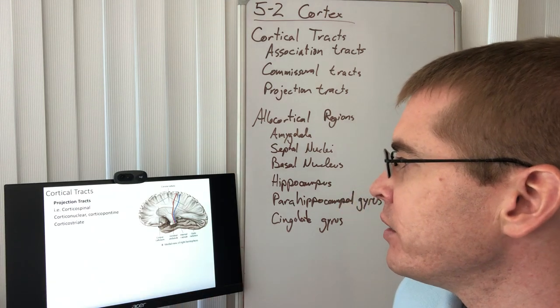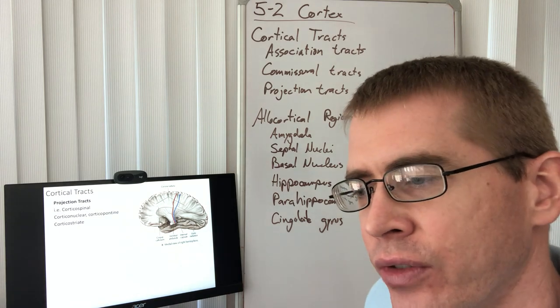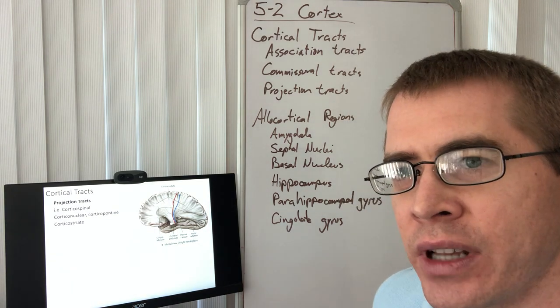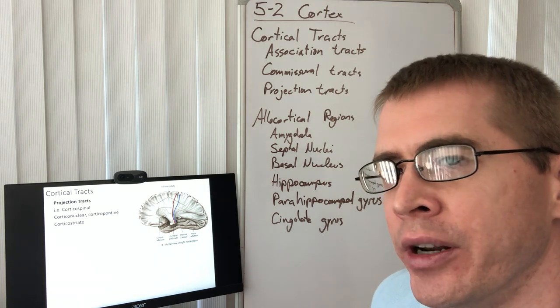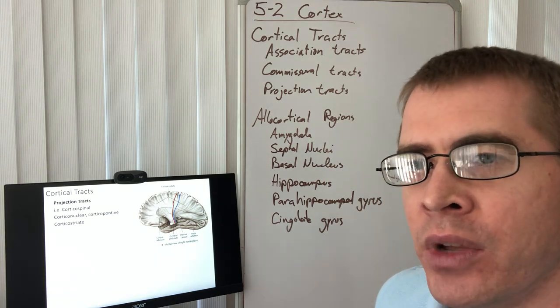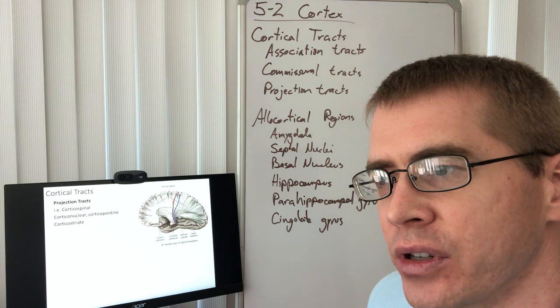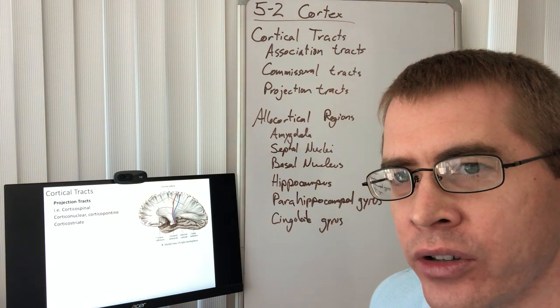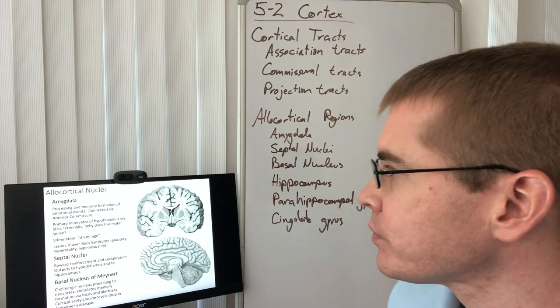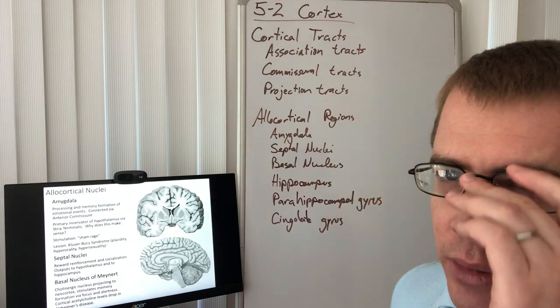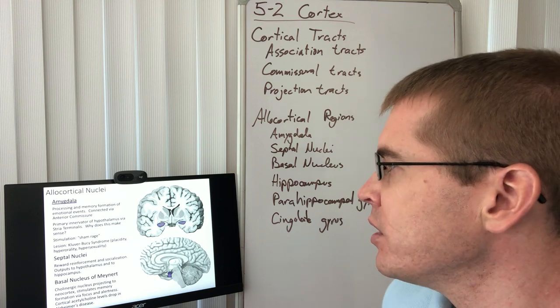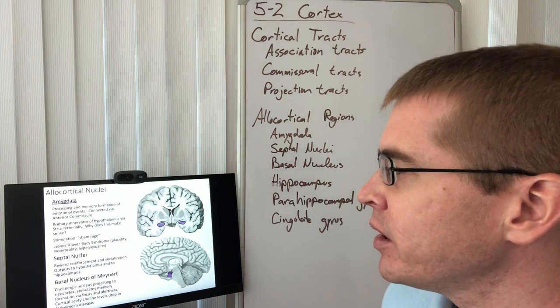And then corticostriate. So these are fibers from that layer 6 fusiform cell heading down into the striatum to inform the striatum and the thalamus about information that we intend that's in our cortical awareness, our conscious awareness. Next, let's spend a little bit of time on these allocortical structures. In particular, we're going to talk about the amygdala.